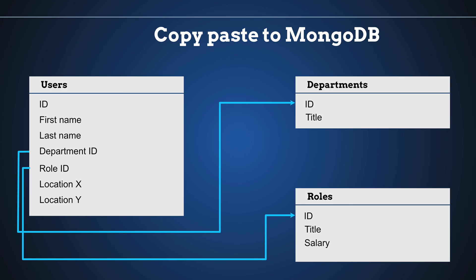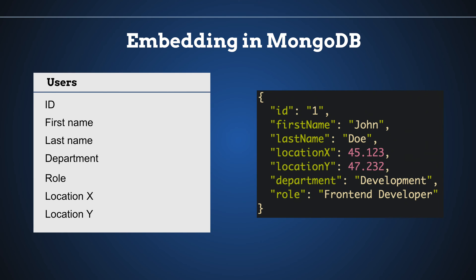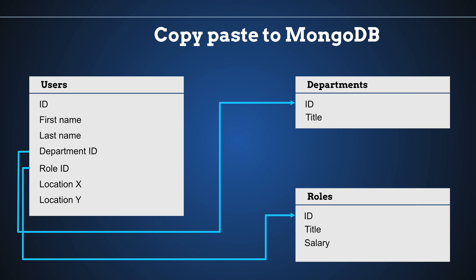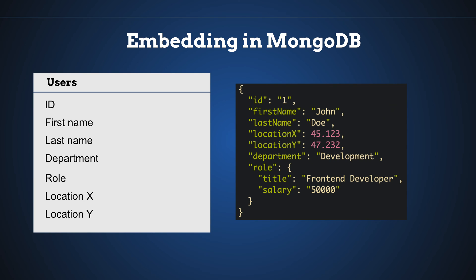So this is how we could convert our relational example to MongoDB. As you can see, we have three collections and references between them, but actually we can do it in a different way. We can simply create a single collection — users — and inside we store our users. Inside every single user we can just store a string of the department without creating a reference. And if you have several departments for one user, then you can store an array of these departments. The same goes with roles — we don't have just a title but also a salary inside — and we can store an embedded array of objects inside our users collection.